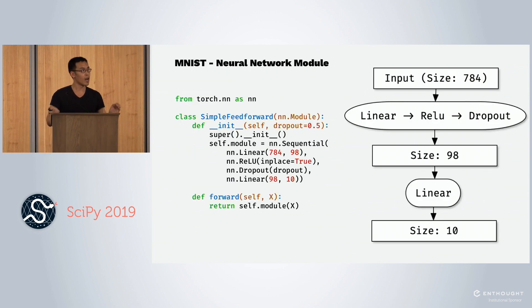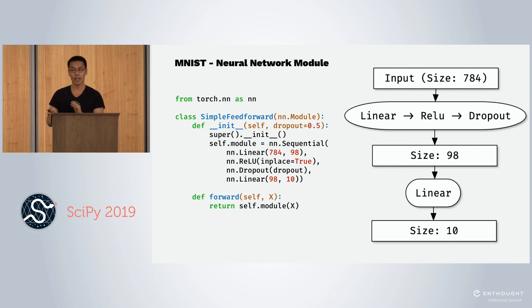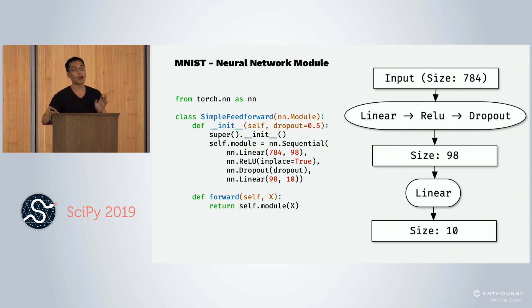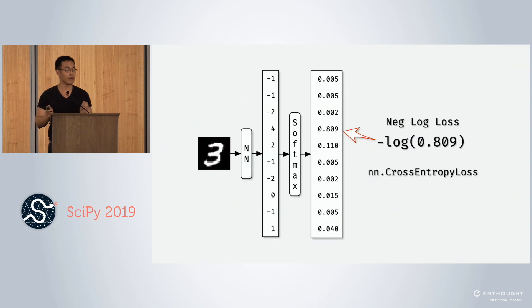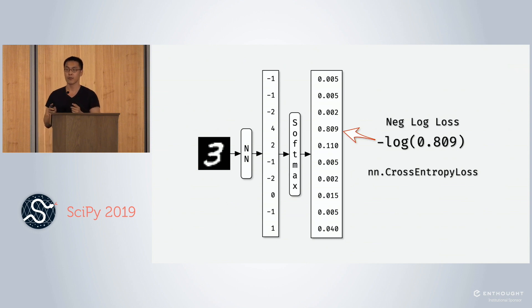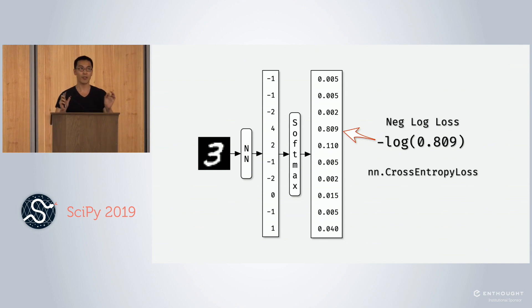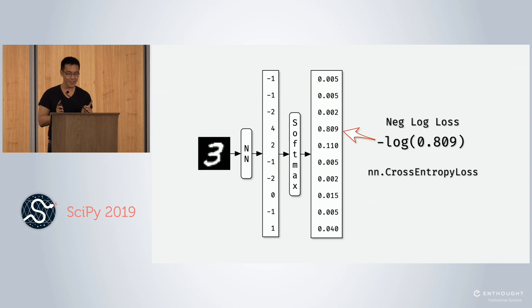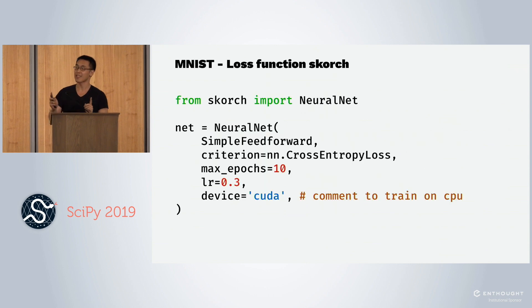We define the module by subclassing the module class of PyTorch. In this case, it's a very simple neural network. It takes in a tensor of size 784 and spits out a vector of size 10. These 10 numbers represent the 10 classes of MNIST. The 10 values are raw logit values — any value between negative infinity and infinity. To get a loss function, we do softmax to get probabilities and negative log loss. PyTorch handles this nicely with cross entropy loss. So now we have the module and a criterion, and we can use the neural net object.